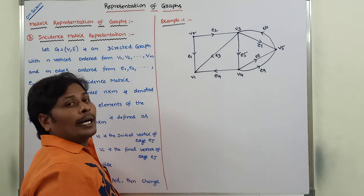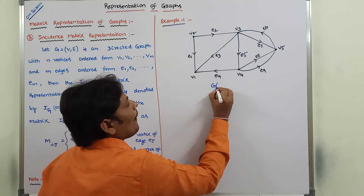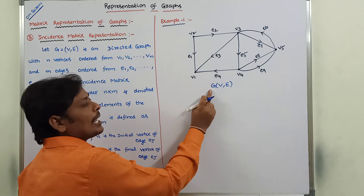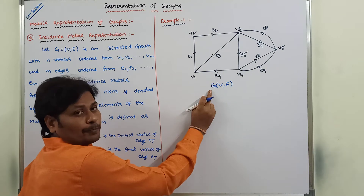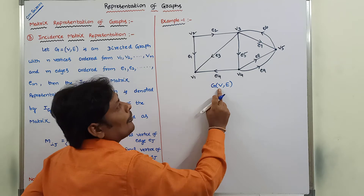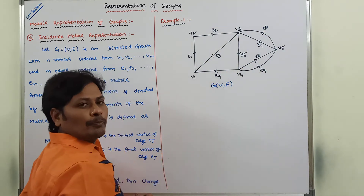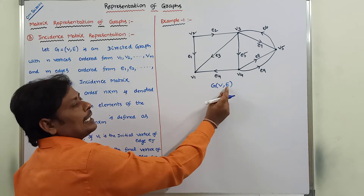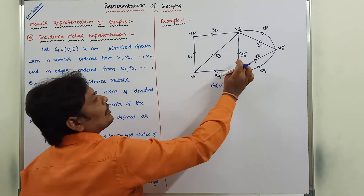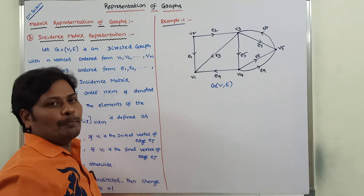This is the given directed graph. It can be written as G of V comma E. Here G is a directed graph with vertex set V = {V1, V2, V3, V4, V5} and edge set E containing E1, E2, E3, E4, E5, E6, E7, E8, and E9.